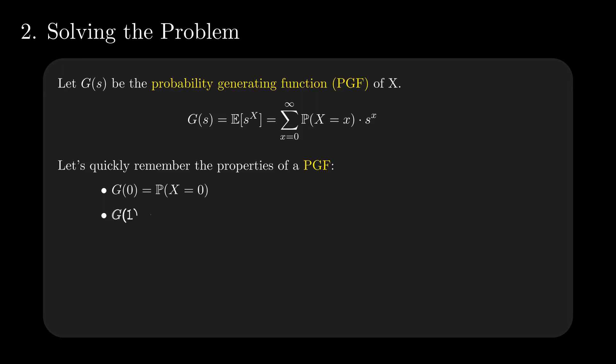G of 1 equals 1. The random variable 1 to the power of X is 1. So the expected value is 1 as well. G derivative of 1 is the expectation of X. The derivative of the sum is the sum of the derivatives. Replace s with 1 in the formula. It then becomes the value of the expectation of X.